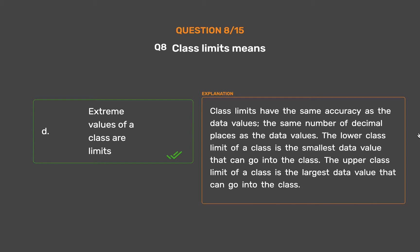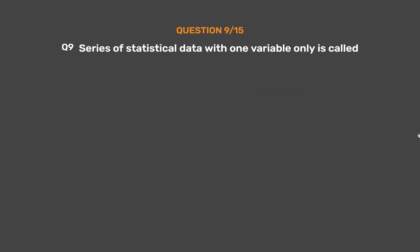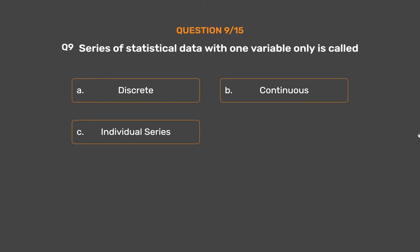The upper class limit of a class is the largest data value that can go into the class. Question number 9. Series of statistical data with one variable only is called: Option A: Discrete. Option B: Continuous. Option C: Individual series.